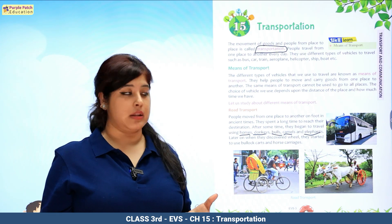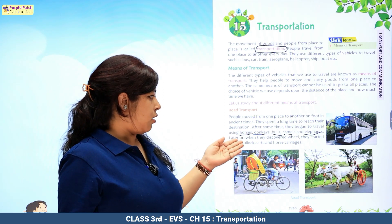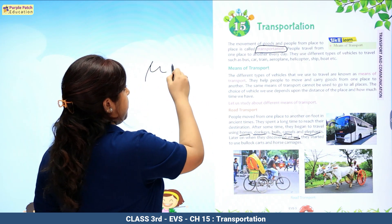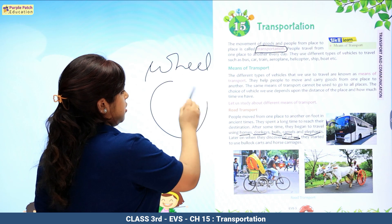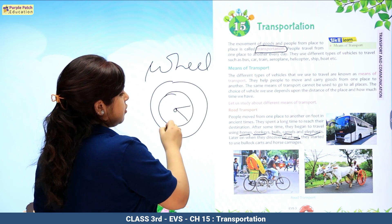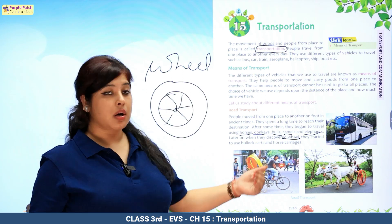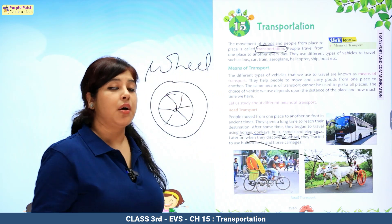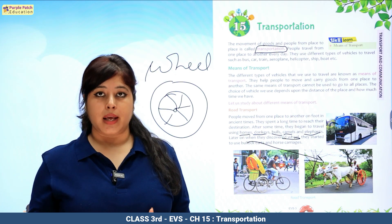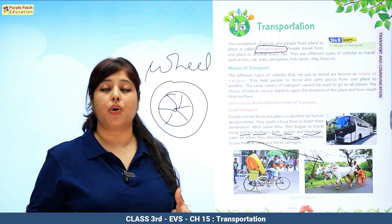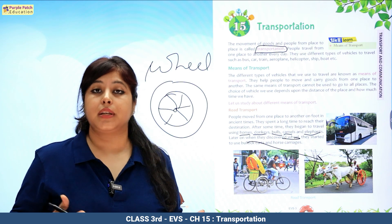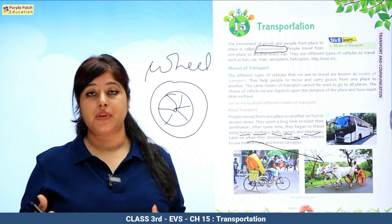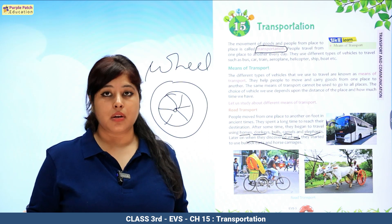So animal driven vehicles were used at that time. Later on, when the wheel was discovered — paainye ka avishkar hua — they started using bullock carts. As you can see in the picture, children, these are bullock carts with a bull driving them. Peechhe cart hai — you can say horse carriages — the animal drives the buggy at the back. So animal driven vehicles were used in that era.